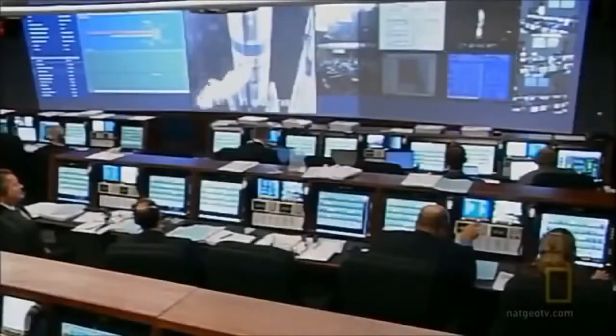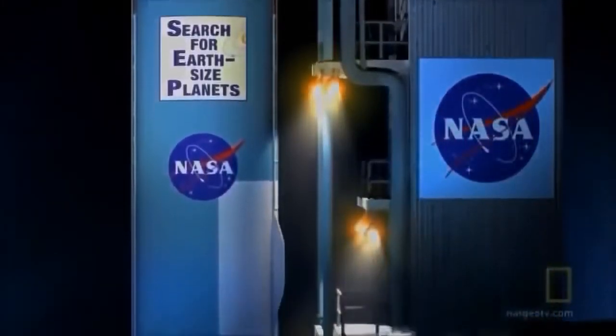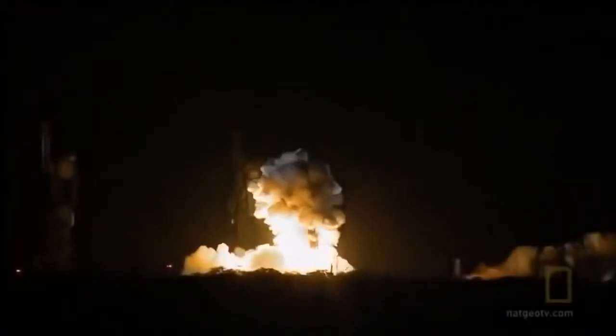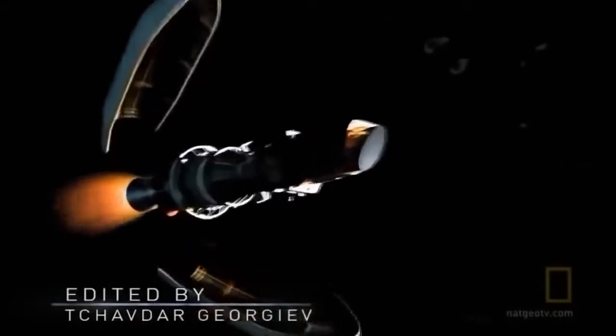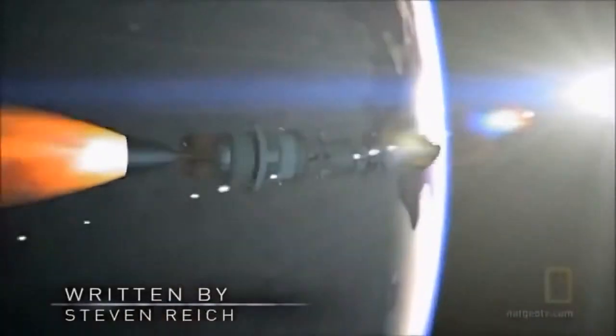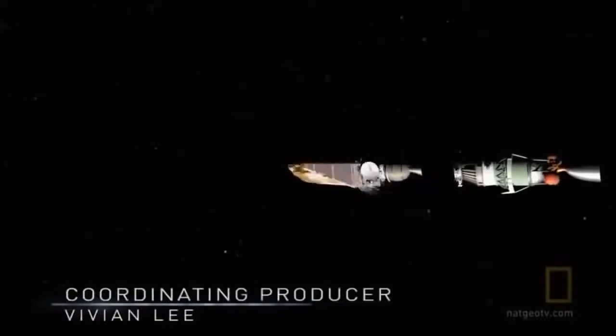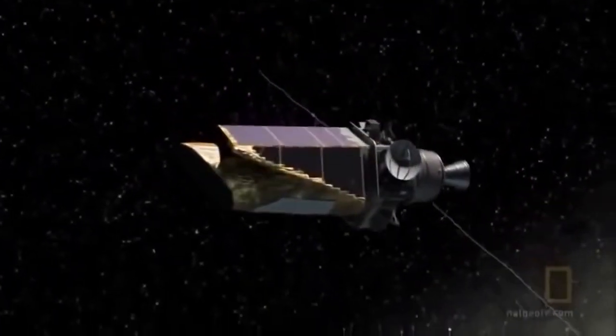March 6, 2009. This Delta II rocket is going through its final pre-flight check. It is the start of an extraordinarily ambitious mission. The Kepler Space Observatory is hunting for planets like Earth within a region of 100,000 stars. It is the culmination of a journey that began more than a decade ago.